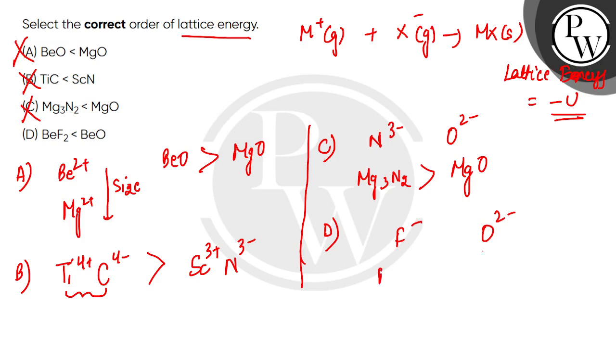Oxygen is O^2-, which has more charge than F^-. Therefore, beryllium oxide's lattice energy will be greater than beryllium fluoride. So option D is correct.